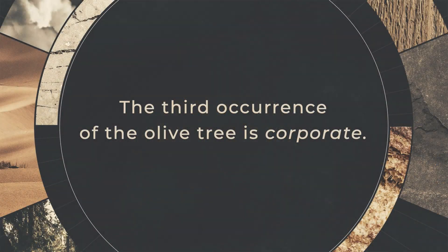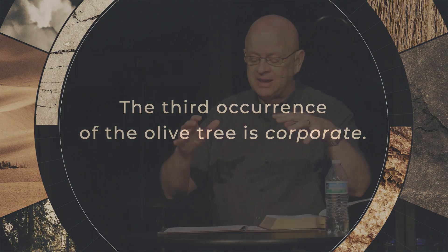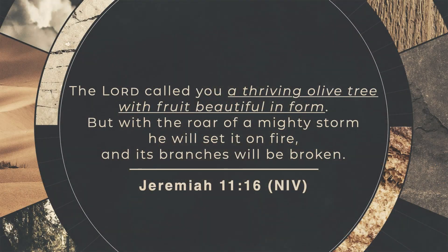The third occurrence of the olive tree is a corporate one — it refers to the corporate nation of Israel, and later to the covenant people of God. Jeremiah 11:16 says, 'The Lord called you a thriving olive tree with fruit that's beautiful in form. But with the roar of a mighty storm, he will set it on fire and its branches will be broken.' Jeremiah is writing to the Jews who are in exile in Babylon, in the past tense. Earlier Israel had been faithful to God, but now they've broken off that relationship like an unfaithful marriage partner or a rebellious child. And since Israel was disconnecting from God, Jeremiah indicates there's going to be an inevitable judgment that's going to fall upon the nation.